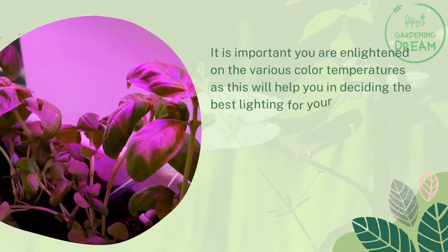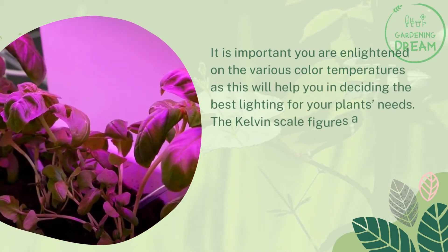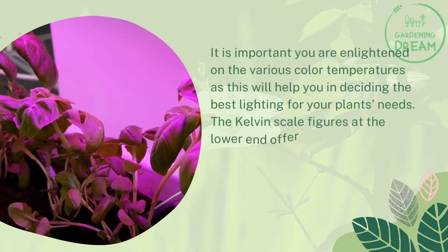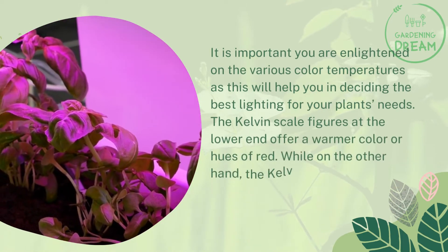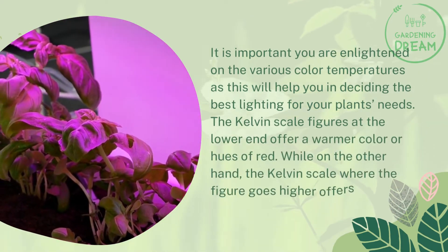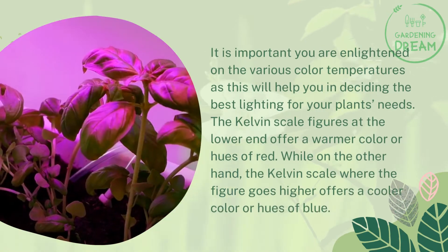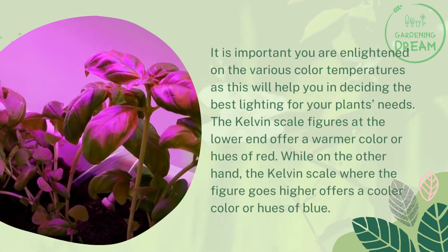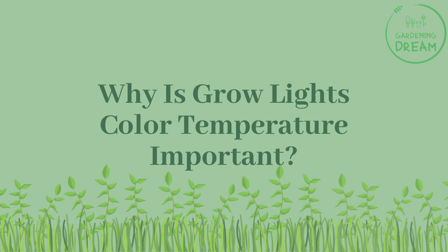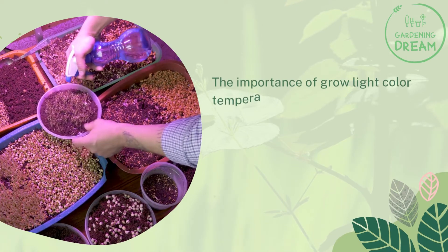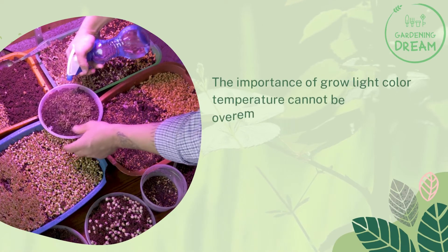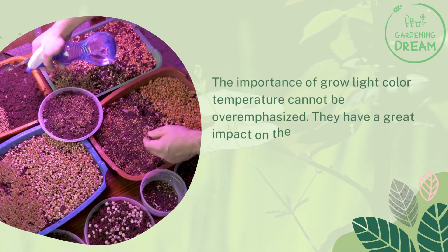The Kelvin scale figures at the lower end offer a warmer color, or hues of red, while on the other hand, higher Kelvin figures offer a cooler color, or hues of blue. Why is grow light color temperature important? The importance of grow light color temperature cannot be overemphasized — they have a great impact on the growth of plants.